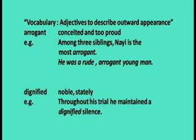Now let's move on to vocabulary — adjectives to describe outward appearance. Let's study the list of adjectives and their meanings used to describe outward or noticeable appearance with example sentences. Arrogant: conceited and too proud. Example: among three siblings, Niyyi is the most arrogant. He was a rude, arrogant young man.